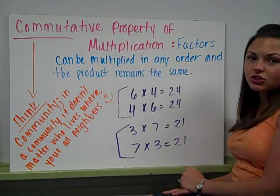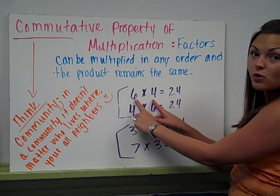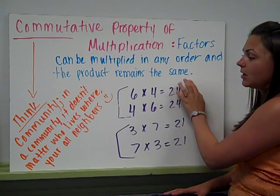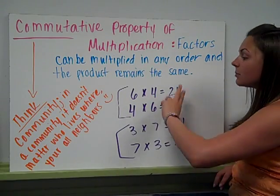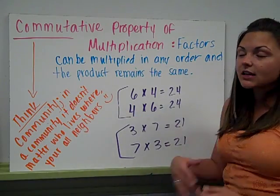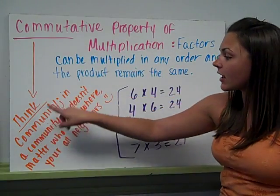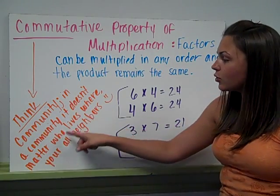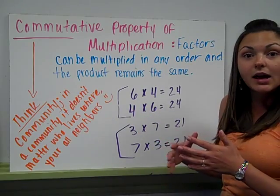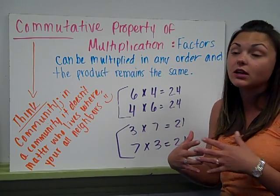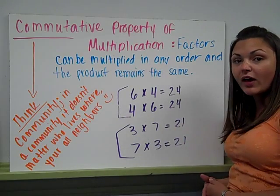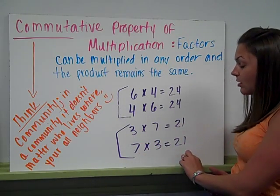The commutative property of multiplication states that factors, which are the two numbers that you multiply, can be multiplied in any order and the product remains the same. So here I have 6 times 4 equals 24. But if I flip-flop that, turn it around and do 4 times 6, that also equals 24. What I like to think of when I think of commutative property, I like to think community. In a community, it doesn't matter who lives where, you're all neighbors. It doesn't matter which order you multiply numbers in. You're going to get the same product. If 3 and 7 are my factors, regardless if 3 is first or 7 is first, my product will remain 21.